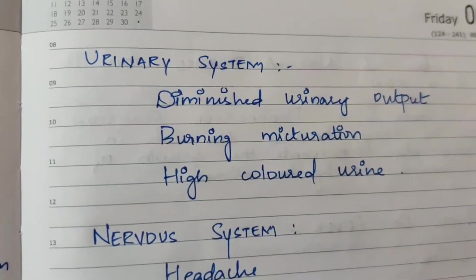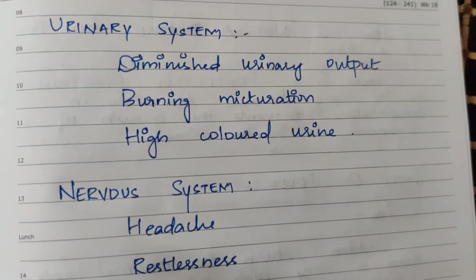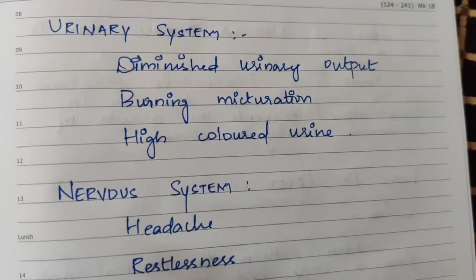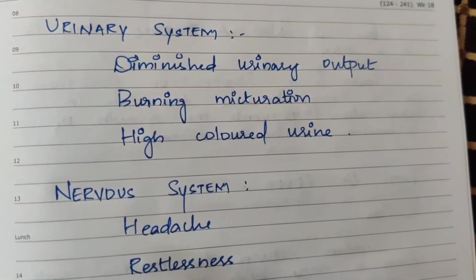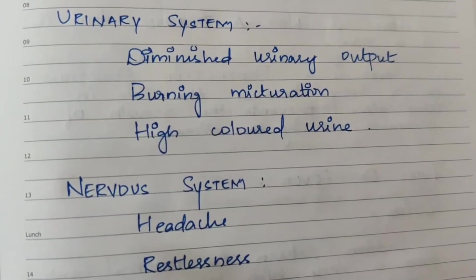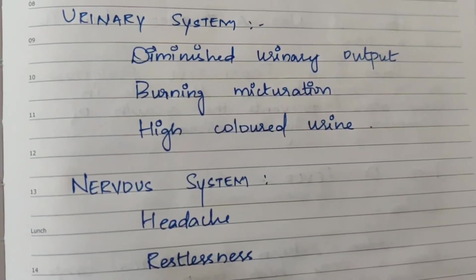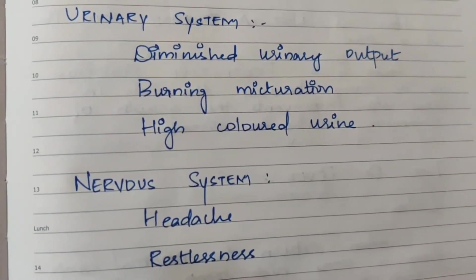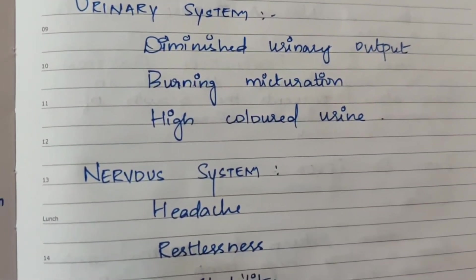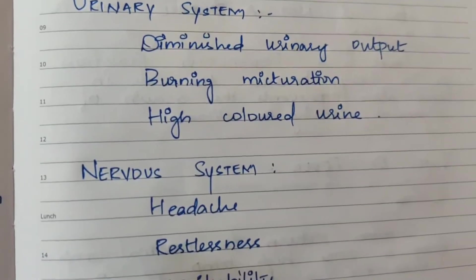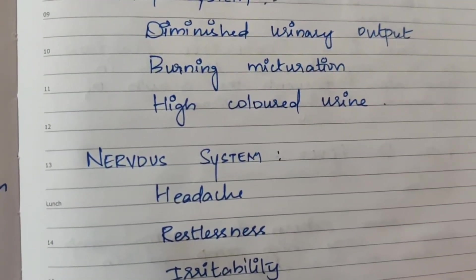In the urinary system: diminished urinary output, changes in urine output, burning micturition, and high-colored urine with pH level changes.